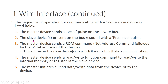The second step: the slave device present on the bus responds with a presence pulse. The third step: the master device sends a ROM command — that is, an address command followed by the 64-bit address of the device — to address the slave device it wants to communicate with. The fourth step: the master device sends a read or write function command to read or write the internal memory or register of the slave device.